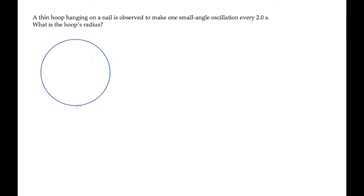The hoop in this problem is hanging from a nail, so that it swings back and forth, making one oscillation every two seconds. We're asked to find the hoop's radius r.